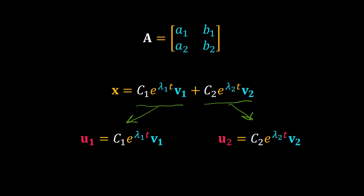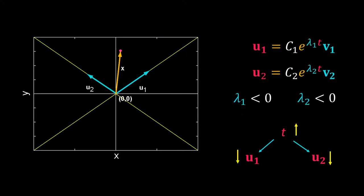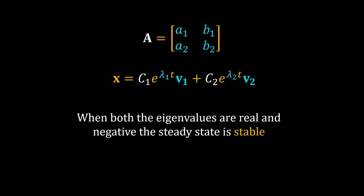So the behavior of vector u1 depends upon the sign of eigenvalue lambda 1, and similarly the behavior of u2 depends upon the sign of lambda 2. Let's take an example: suppose both eigenvalues are negative. Then with time, both u1 and u2 will get shorter. As the position vector is the resultant of these two vectors, with time the system will get closer and closer to zero — the steady state — and eventually collapse to it. This means the steady state is stable. Wherever you start in the phase plane, the system will asymptotically reach the steady state. So when all eigenvalues are real and negative, the steady state is stable.